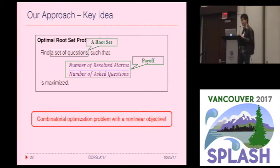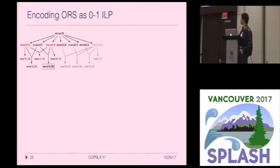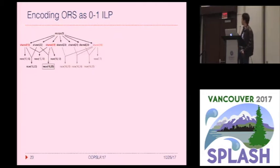But luckily, for any given analysis run, we only have finite numbers of alarms and potential causes. So we can just do a brute-force search on the payoff. To do so, we reduce the problem into a sequence of zero-one integer linear programming problems. I'm going to use the second iteration of our approach as an example to explain how we encode the problem.